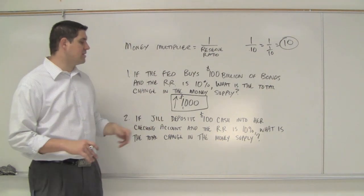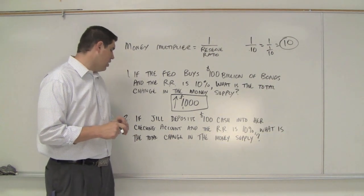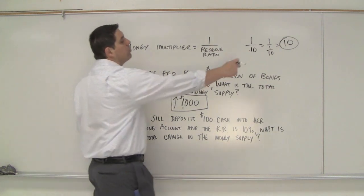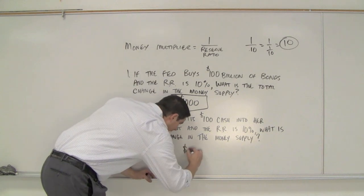Now let's try this one. If Jill deposits $100 cash into her checking account and the reserve requirement is 10%, what is the total change in the money supply? Well, we already know the multiplier is 10. And so you wanted to say this is $1,000, but it's not. It's actually only $900.